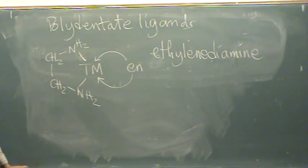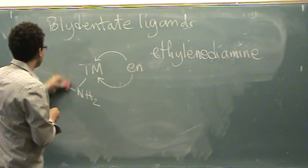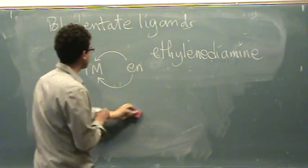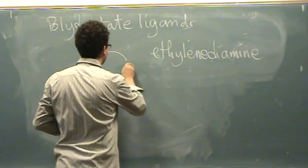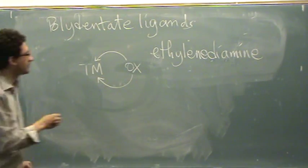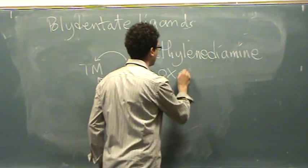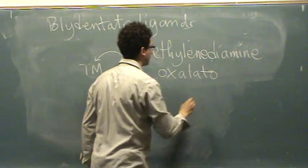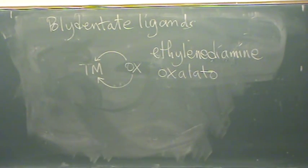But En is the symbol for it. Another one. So there's only three in your text. It's OX, oxalato. It bites on in two places.